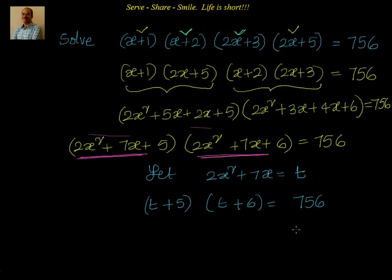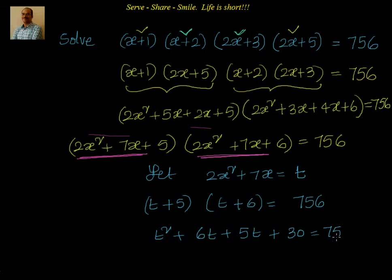Will you agree that this is now a quadratic equation? Let us multiply: t squared plus 6t plus 5t plus 30 equal to 756. Simplifying, I have t square plus 11t minus 726 equal to 0.